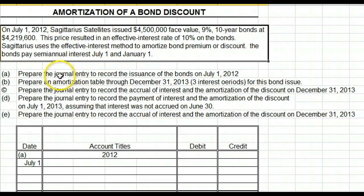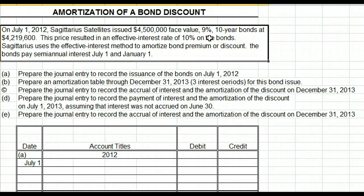The first thing we have to do is prepare the journal entry to record the issuance of the bonds. Because the face value is greater than the selling price, we're going to be selling it at a discount. Sagittarius is offering 9% interest; however, in the marketplace, buyers could buy bonds of comparable risk of other companies and earn 10%. So we have to discount the price of our bonds so that people will buy them.